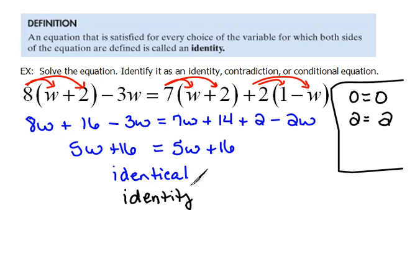We call this an identity. Now your answer for this is actually, you could write it in several different ways. You could write your answer as, in set builder notation,